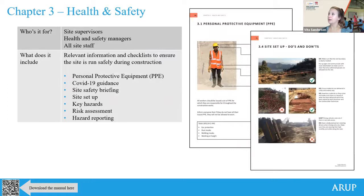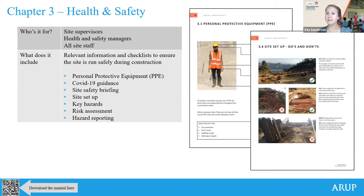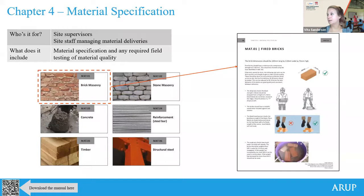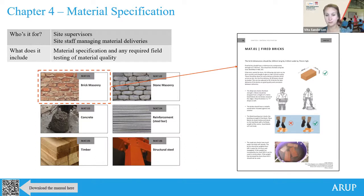The third chapter focuses on health and safety - leadership comes from site supervisors but it's relevant for everybody. It covers personal protective equipment, a section on COVID, safety briefings, how to set up your site, particular hazards and risk assessments relevant for the different types of retrofitting. The fourth chapter covers each of the different materials - there are six - with sections explaining on-site testing you can do, so people on site know what to check when materials get delivered.